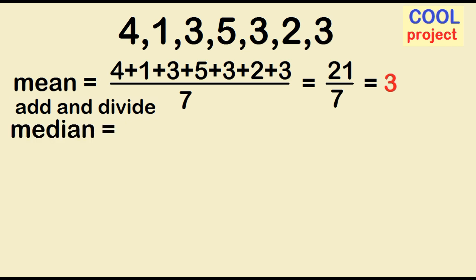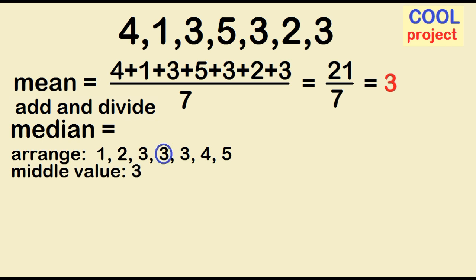Note that the number of data values is 7, which is odd, and this is important in finding the median. First, you have to arrange in ascending or descending order. In ascending order, we have 1, 2, 3, 3, 3, 4, 5. The middle value is 3, meaning our median is 3.